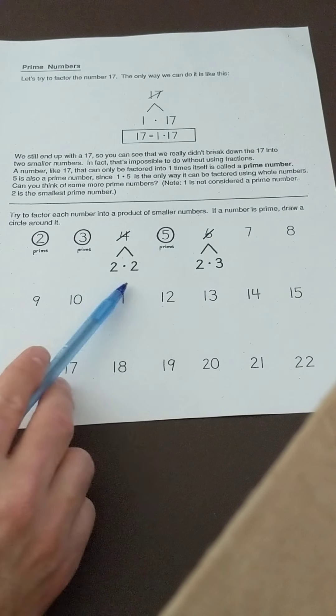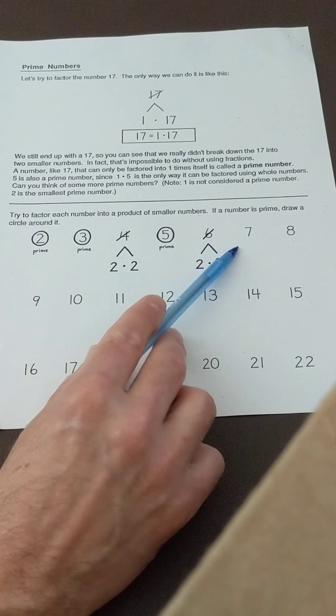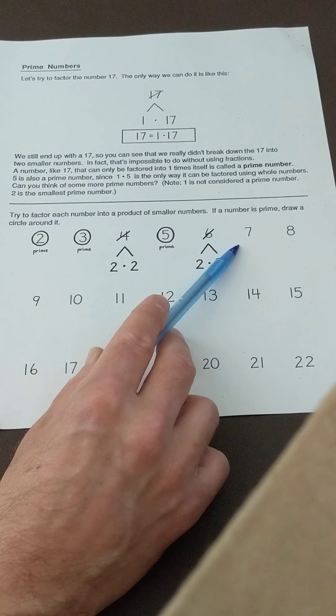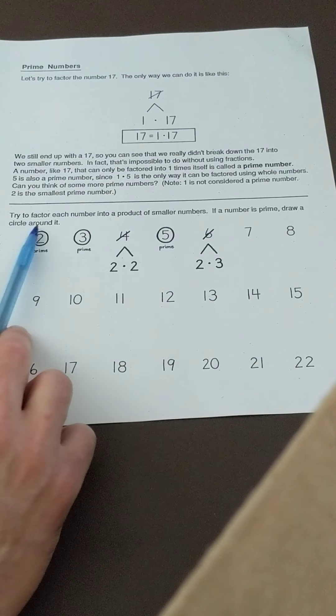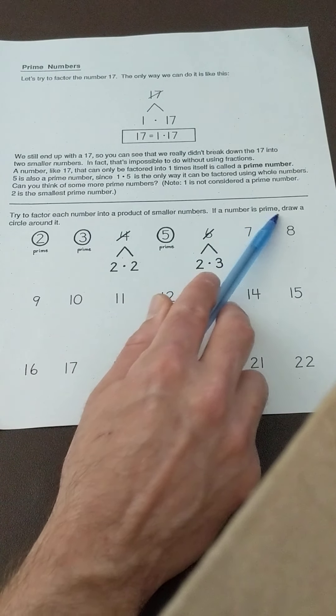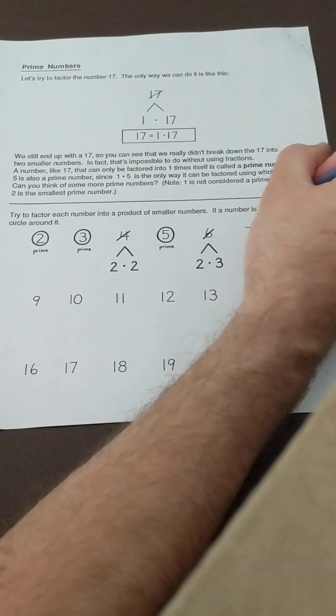So we look at the next number, seven. Seven can't be made with a factor of two small numbers. So try to factor each number into a product of smaller numbers. If a number is prime, draw a circle around it. Seven is going to be prime, so we draw a circle around it and we write prime, just like they did.